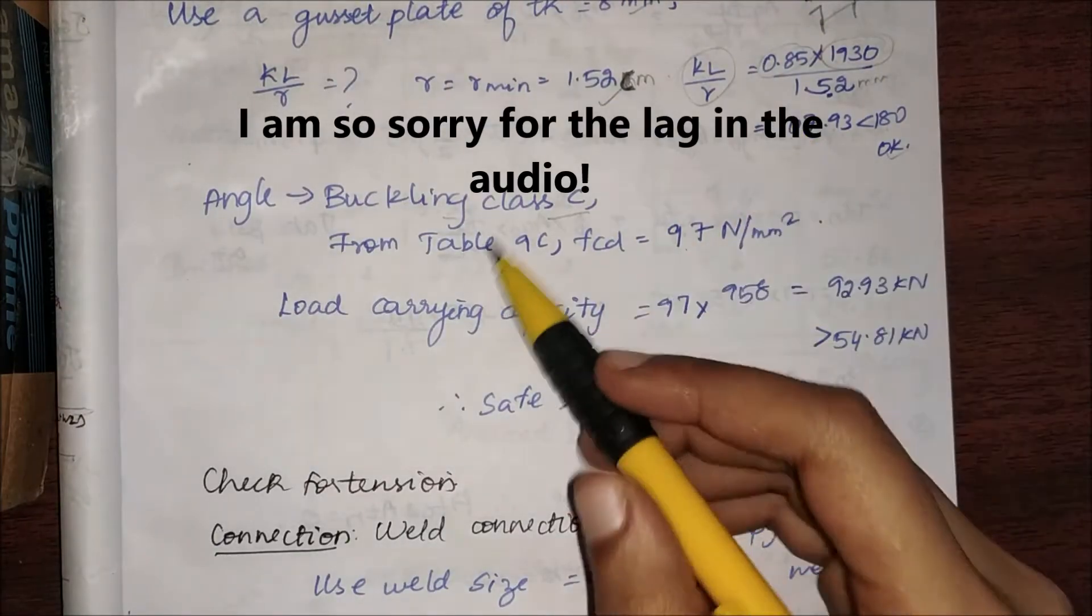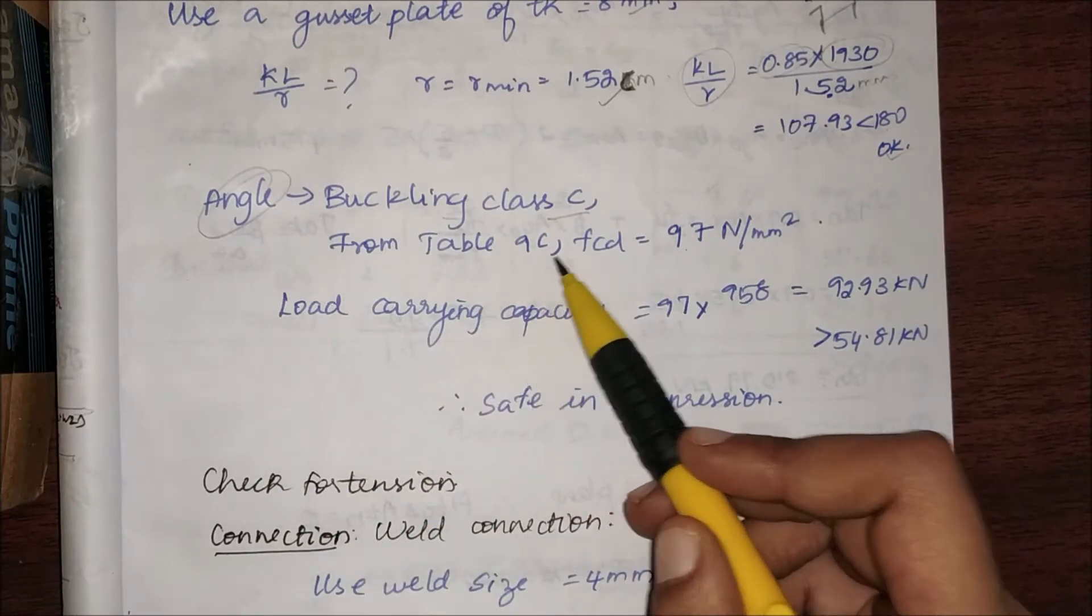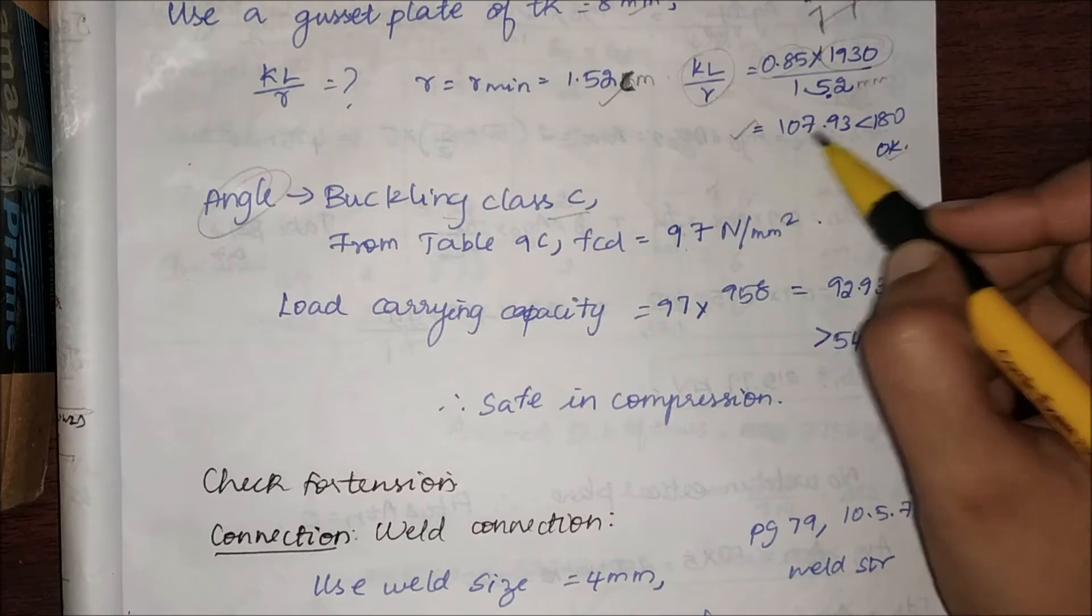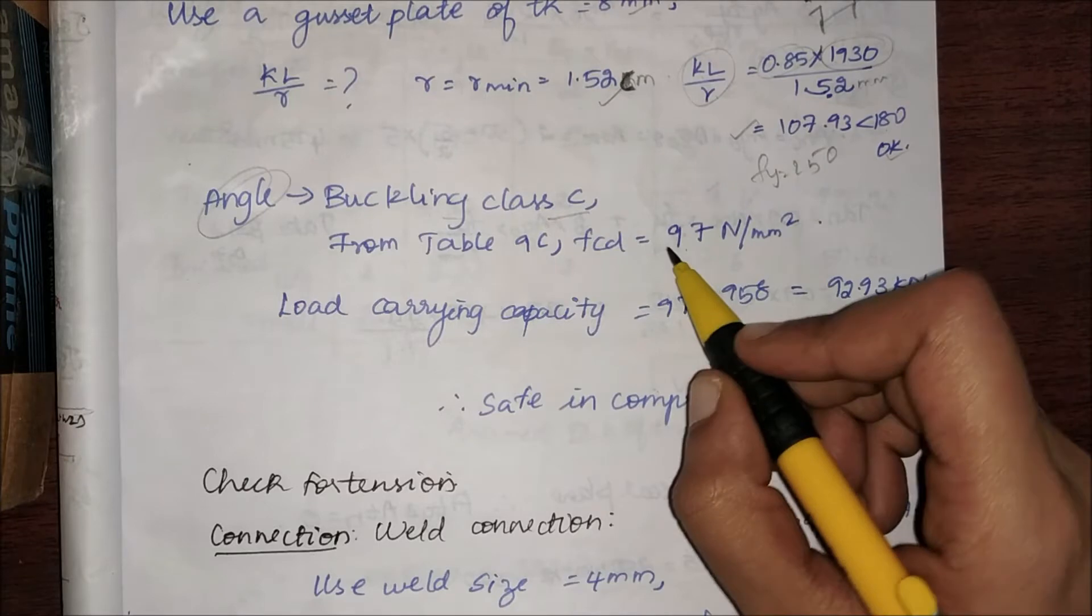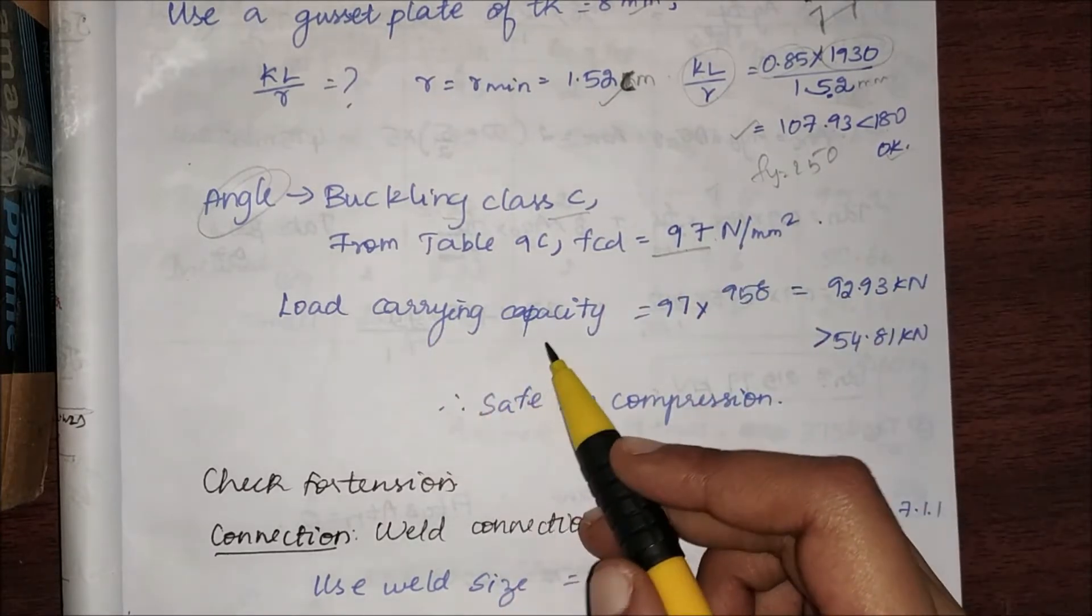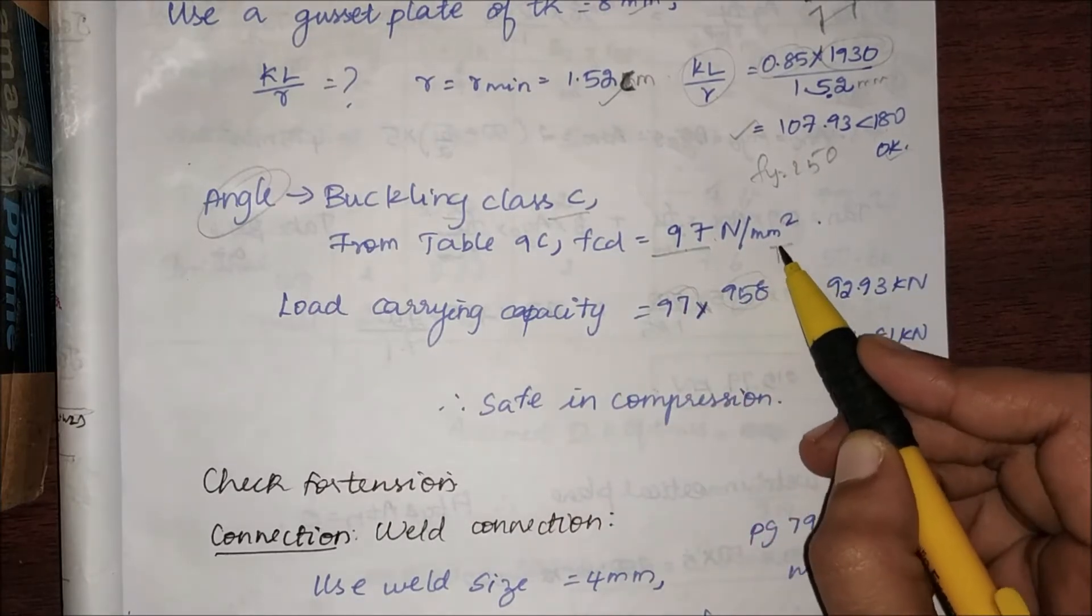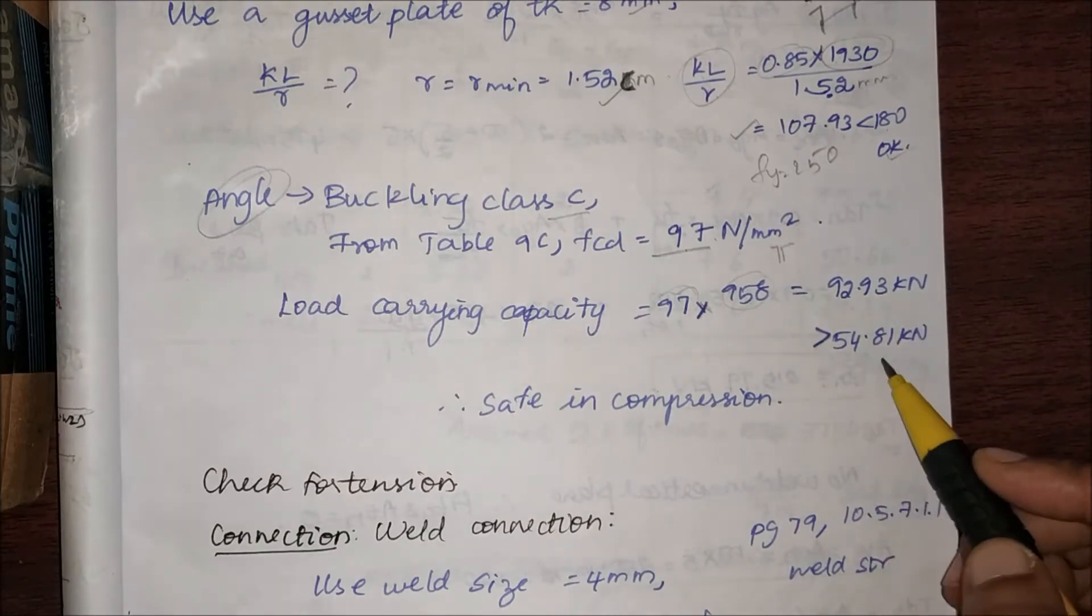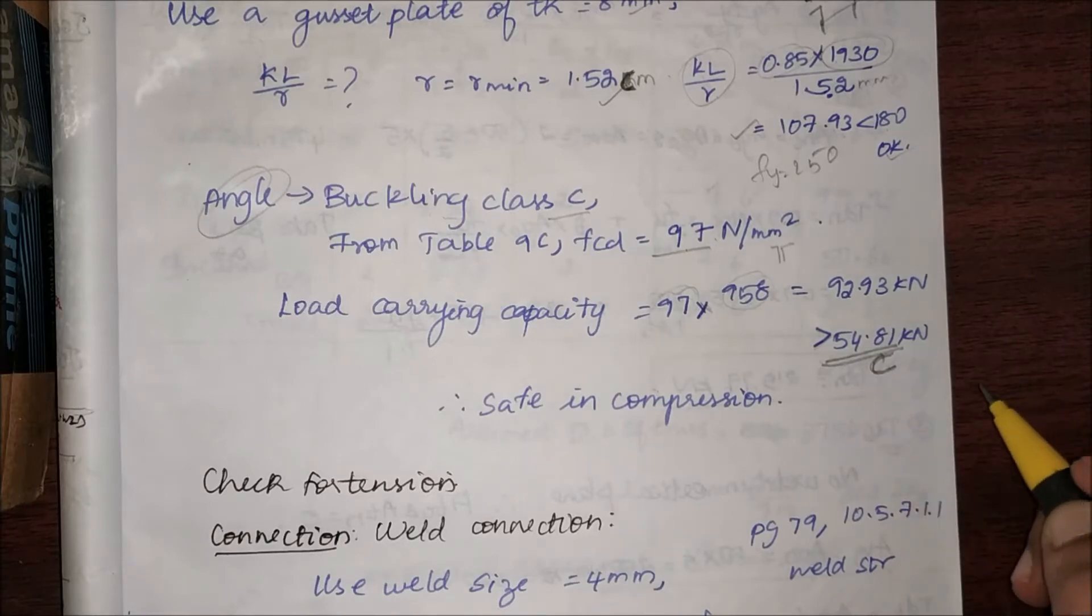Now for the given slenderness ratio, I'm going to go for buckling class C because it is an angle section. From table 9C, FCD is equal to 97 for kl/r equal to 107.93 and Fy equal to 250. Load carrying capacity is 97 times the area of both angles together, which gives me 92.93 kN, greater than 54.81. Therefore it is safe in compression.